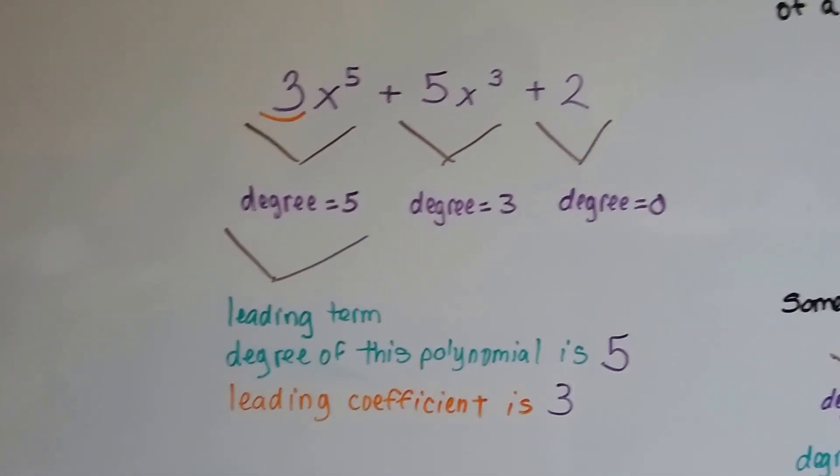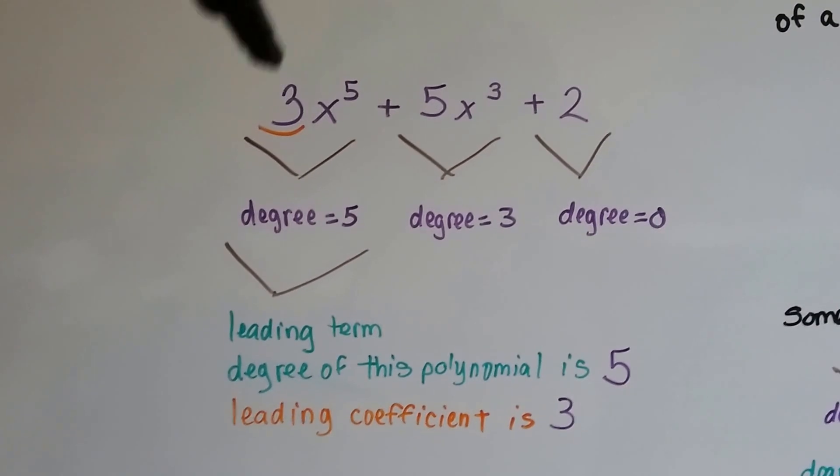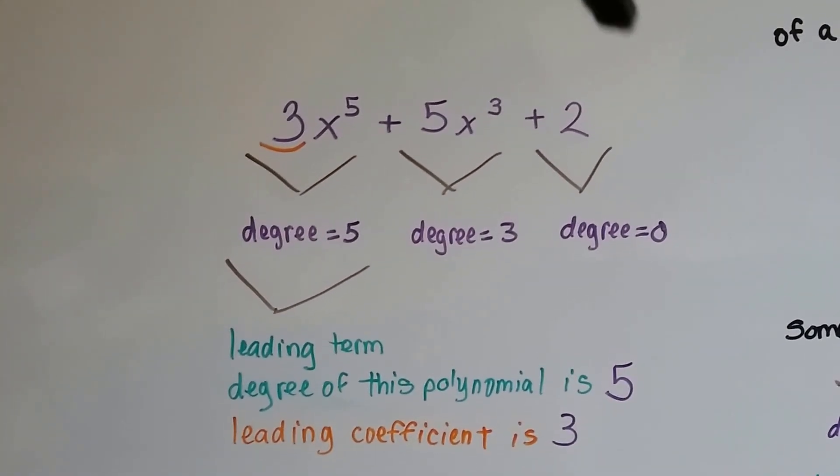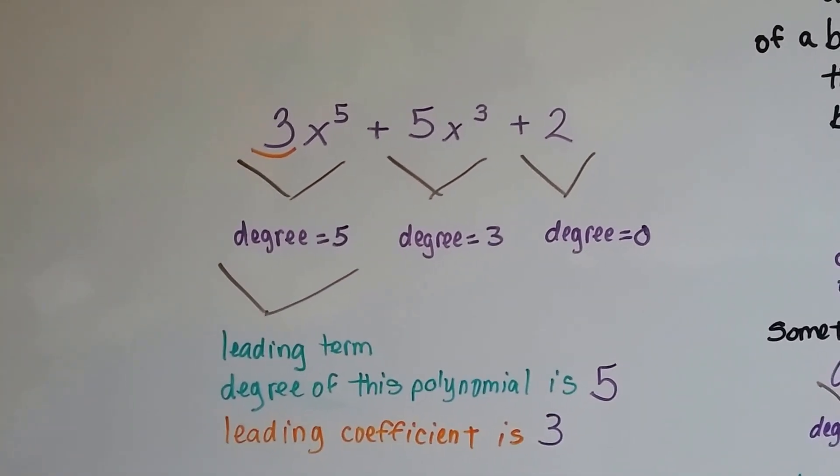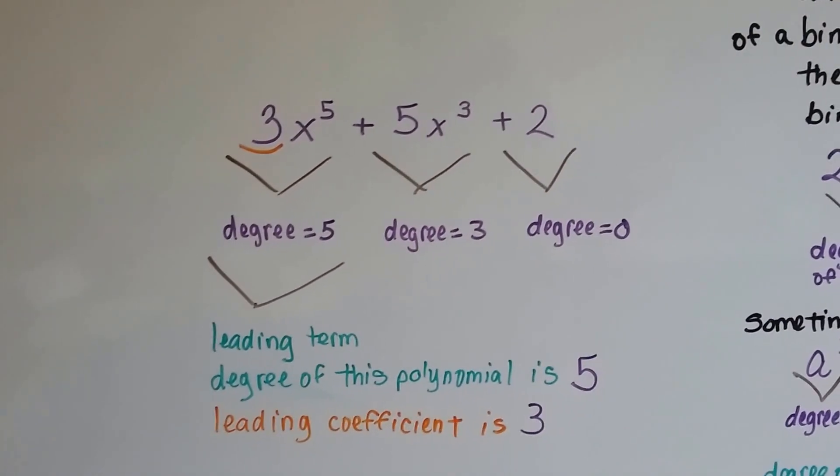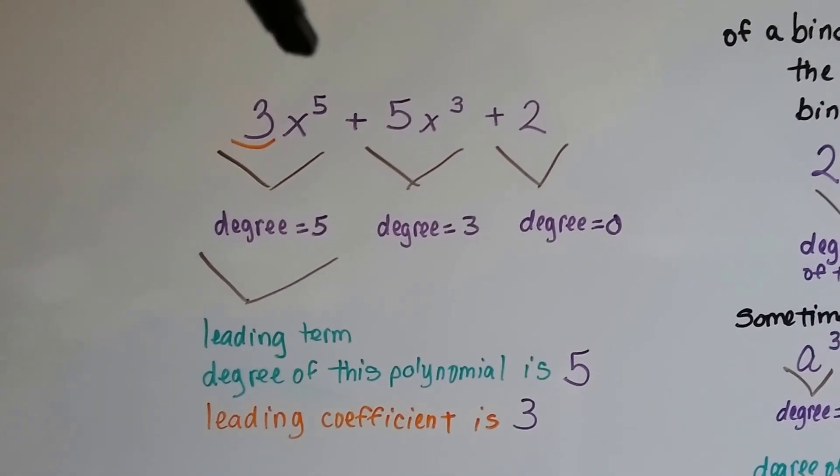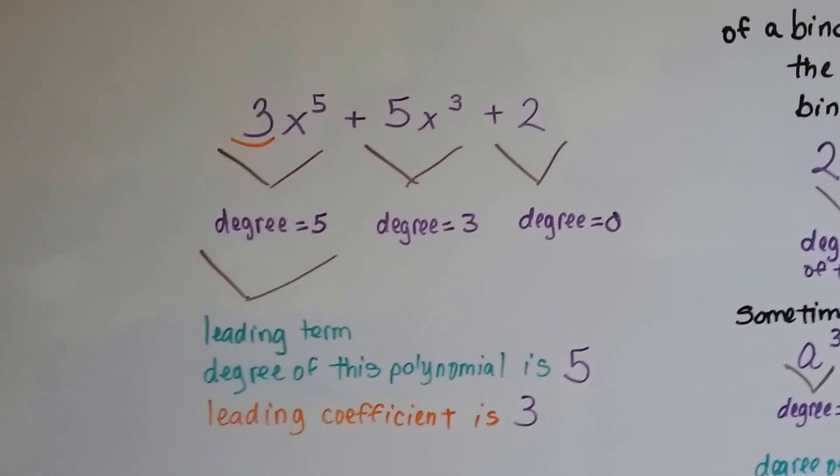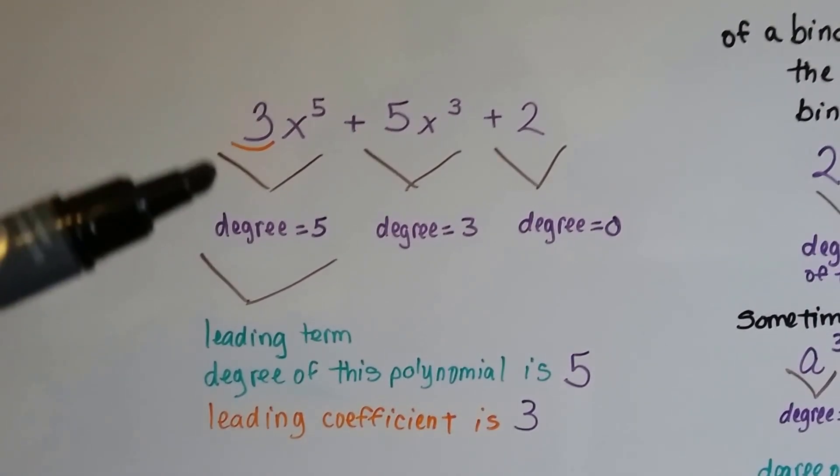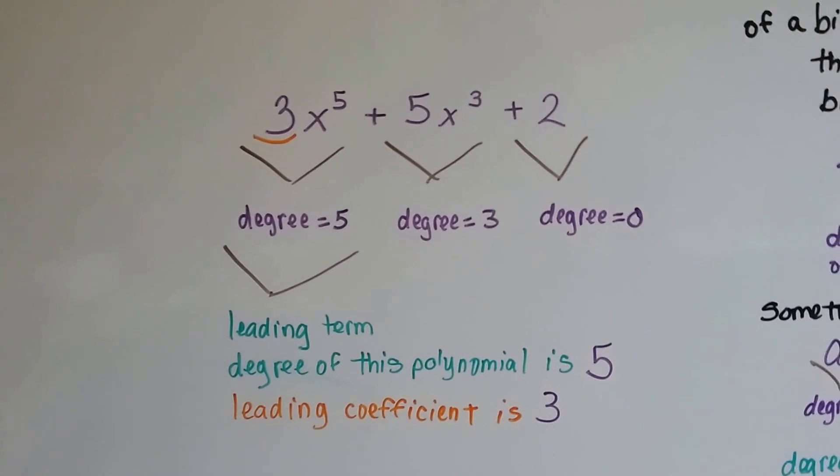In this polynomial, we've got, this has got a degree of 5, that's got a degree of 3, and that's got 0, because there's no exponent. This one becomes the leading term. The degree of the entire polynomial is 5, because of that leading term. And the leading coefficient is 3, because it's the term that's got the highest degree.